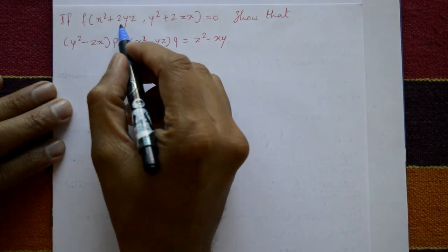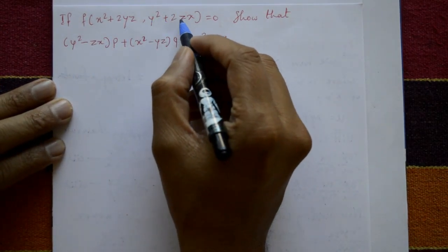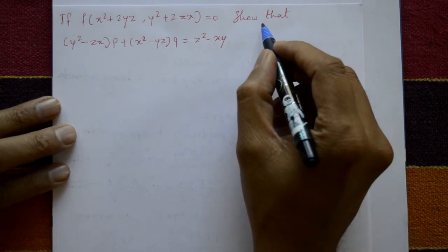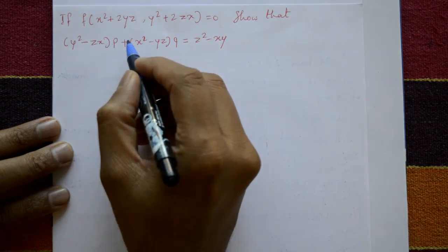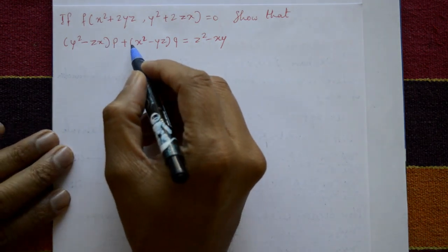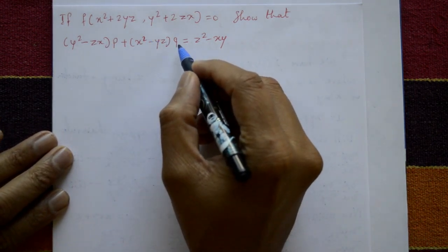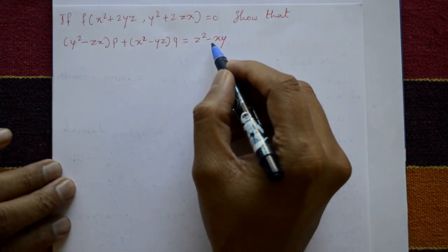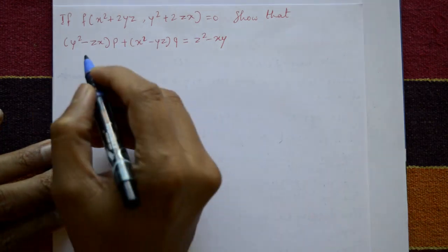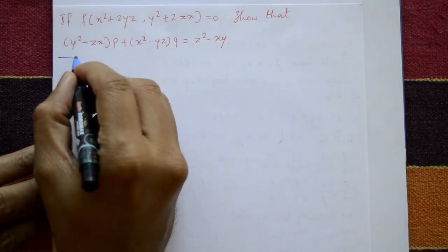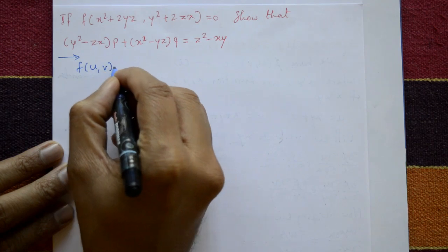If f(x² + 2yz, y² + 2zx) = 0, show that (y² - zx)p + (x² - yz)q = z² - xy. We need to prove this. Now, solution.